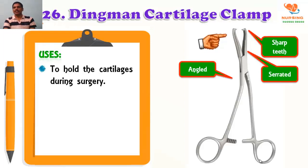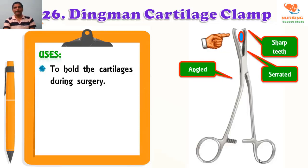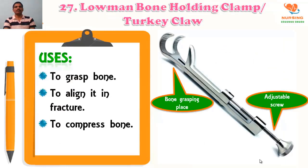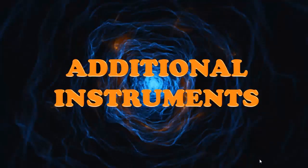Grasping and holding: cartilage clamp is used to hold the cartilage during surgery. On the picture you can see a slightly angled and serrated blade with sharp teeth. Do not make confusion between the Kocher forceps and this clamp — when you close this forceps, a round gap is visible. Lowman bone holding clamp, or turkey clamp, is used to grasp the bone, align it at the fracture, and compress the bone. On the picture you can see the bone grasping place on top and adjusting groove at the bottom.